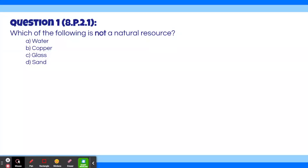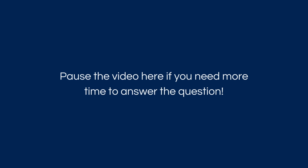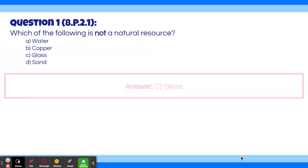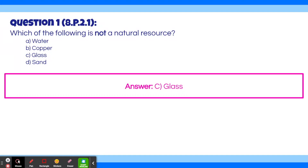Let's get into the first question. Which of the following is not a natural resource? A. Water. B. Copper. C. Glass. D. Sand. The answer to this question is C, Glass. Although glass is made from natural resources like sand, it wouldn't exist if people didn't make it, so it's not a natural resource.